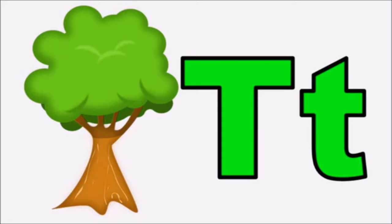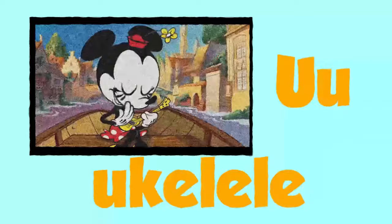S is for socks, s, s, socks. T is for tree, t, t, tree. U is for ukulele, u, u, ukulele.